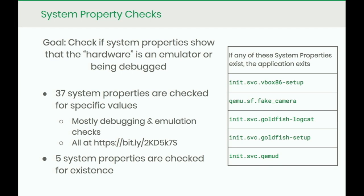The first 37 of the 45 checks go through system properties, all aimed at determining whether the hardware is an emulator or being debugged. Most are looking for common emulators and debuggers. One interesting check: they will not run if SE Linux is not in enforcing mode, meaning they generally won't run on rooted devices. The last five checks simply look for whether certain system properties exist at all — all related to different types of emulators or tools that emulators and debuggers set up to look like a real device.